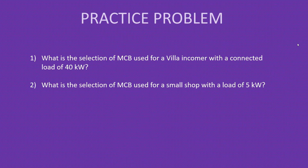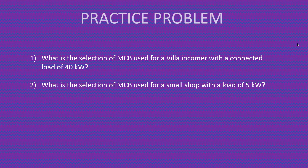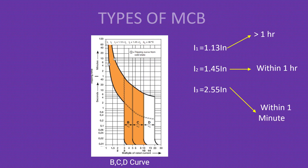Here are some practice problems — please complete them and comment the answers in the comment section, as this will help you gain experience in MCB selection. First: what is the MCB selection for a villa incomer with a connected load of 40 kilowatt? Second: what is the MCB selection for a small shop with a load of 5 kilowatt? That's it, guys. I think you got a fair idea about MCB working and selection. See you in the next video. Bye!